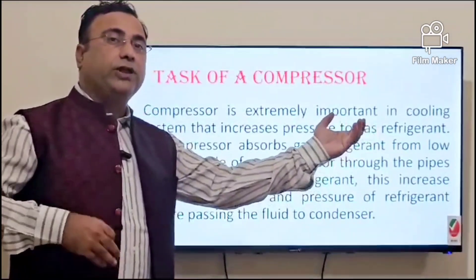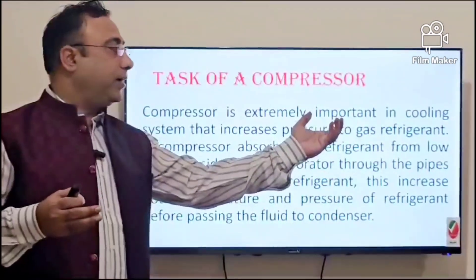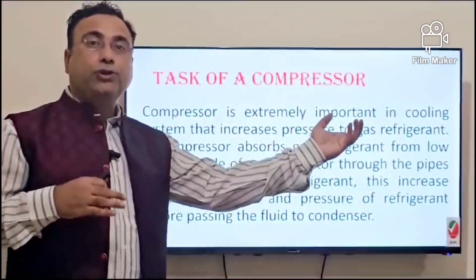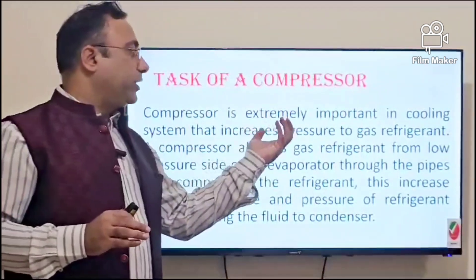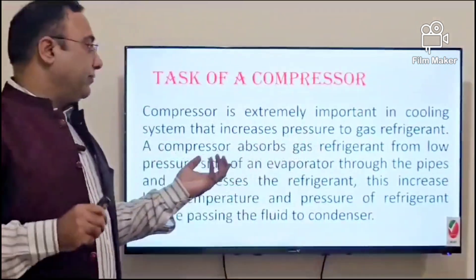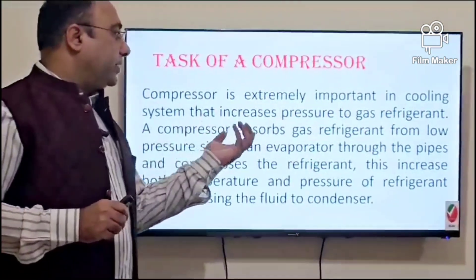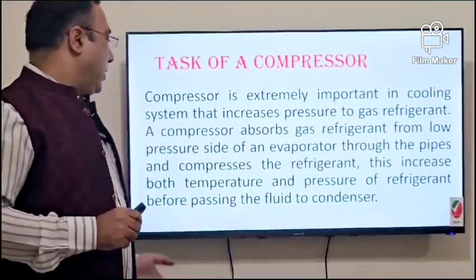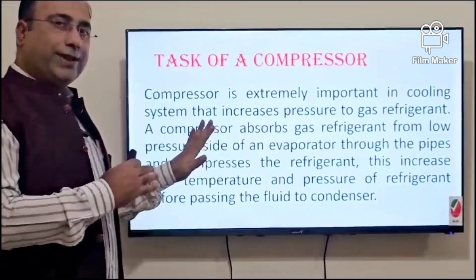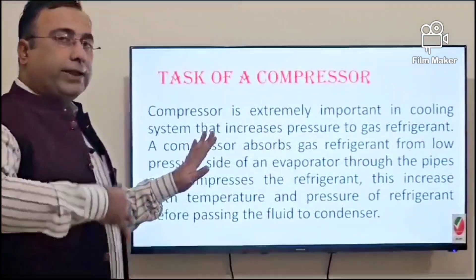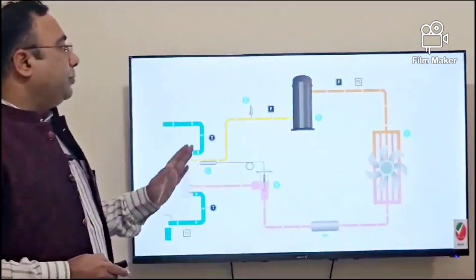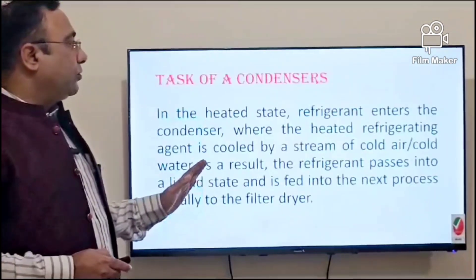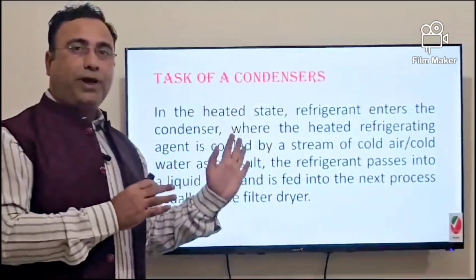The second component is the compressor. The compressor's main job is to increase pressure to the gas refrigerant. In every chiller, the refrigerant used is something like R404 or R407. The compressor absorbs gas refrigerant from the low pressure side, increases the pressure, and sends it to the condenser.